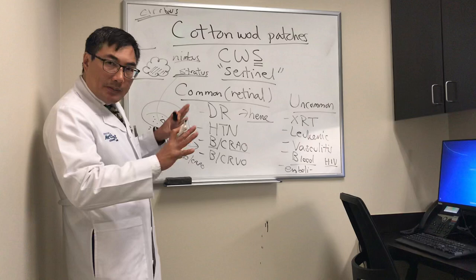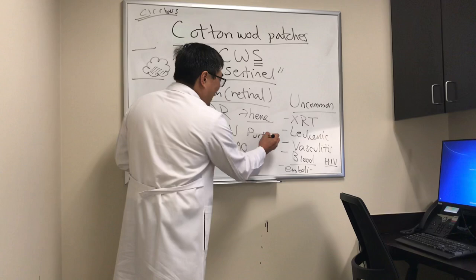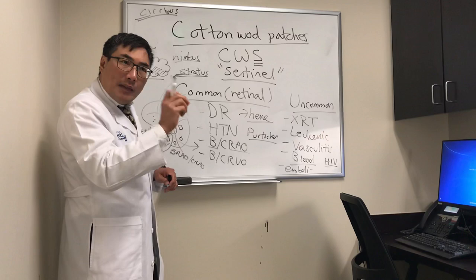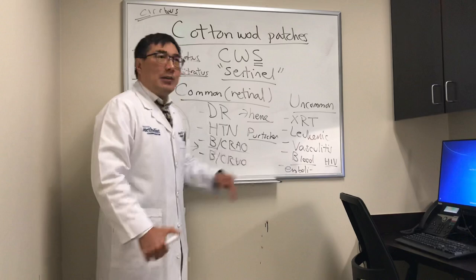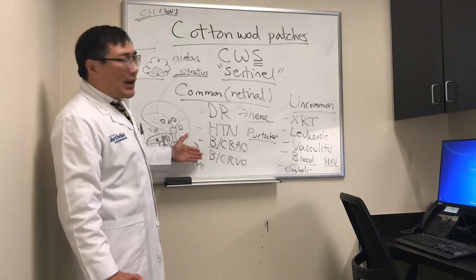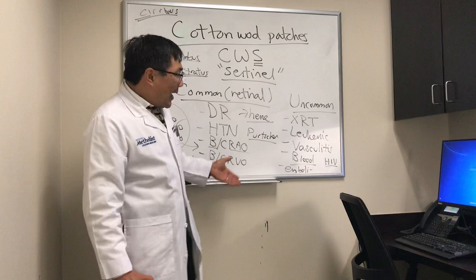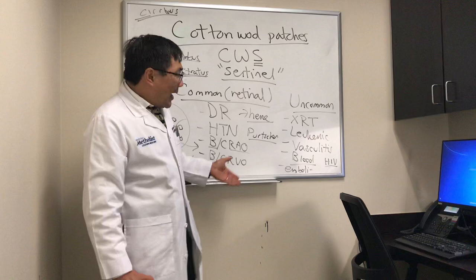HIV also looks like that. We can also see multifocal cotton wool patches with or without hemorrhages in Purtscher retinopathy or Purtscher-like retinopathy — small micro-emboli from pancreatitis, abdominal aortic aneurysm, chest compressions, or hematologic problems. In summary: make sure the cotton wool patch isn't from the common causes — diabetes, hypertension, arterial or vein occlusion. If it's not in a common pattern, think radiation, hematologic problems, vasculitis, HIV, Purtscher, or micro-emboli from an aortic or carotid source.